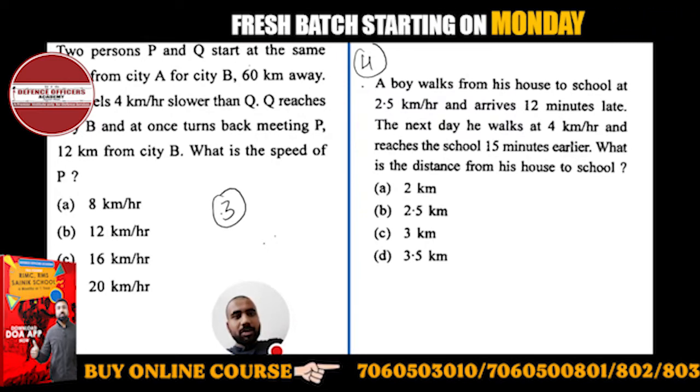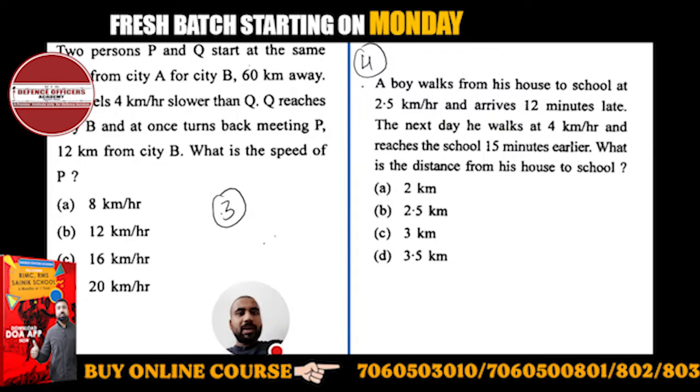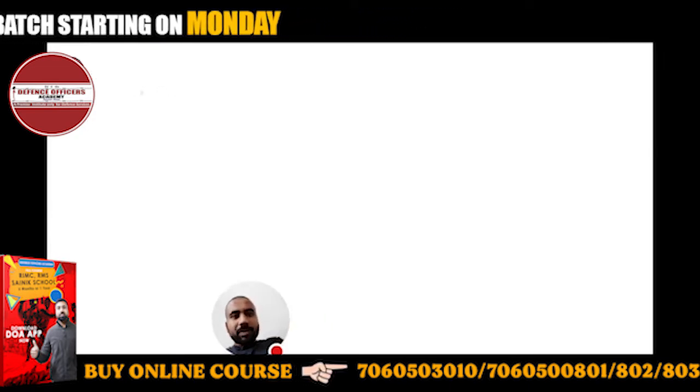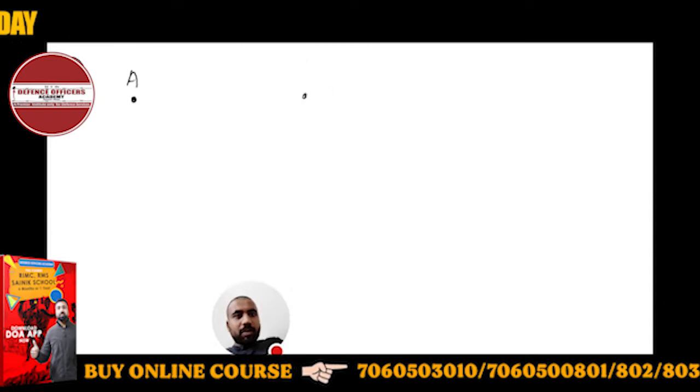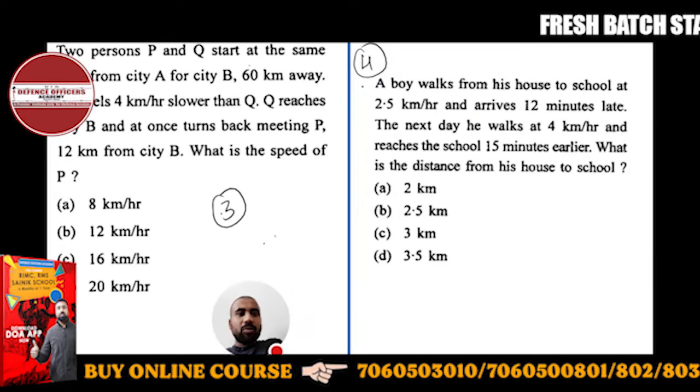This is question number three. Suppose this is point A and this is point B, 60 kilometers away.